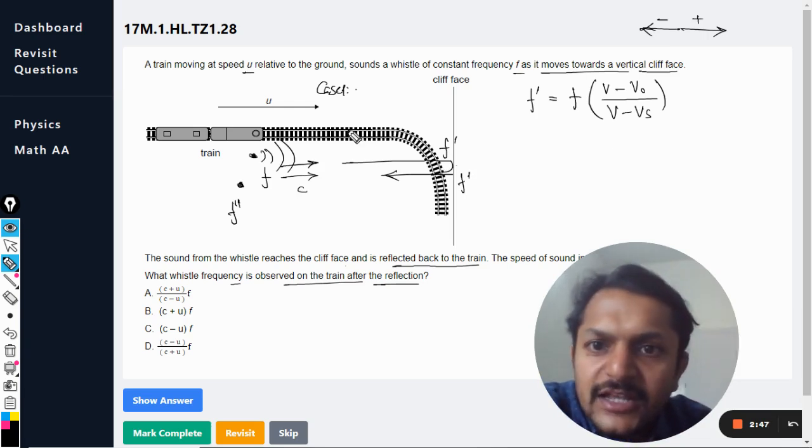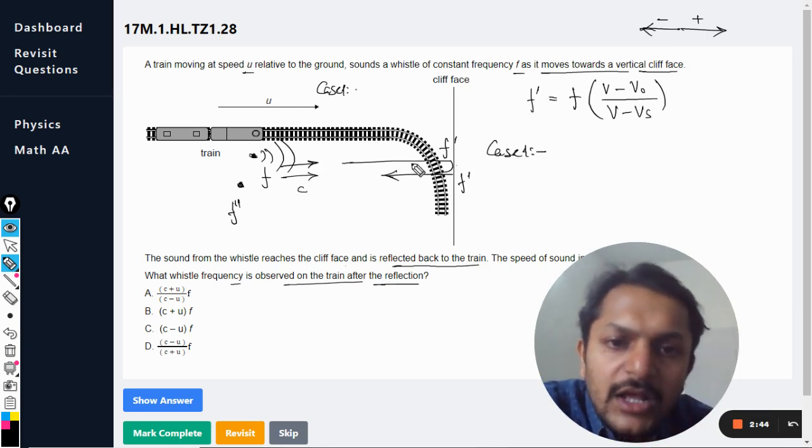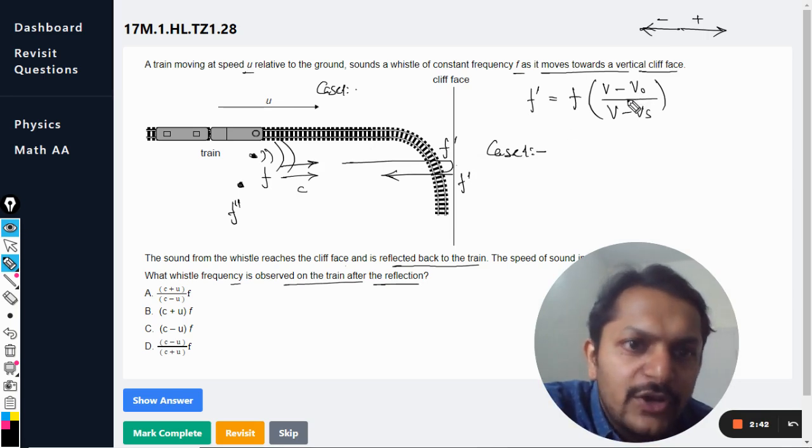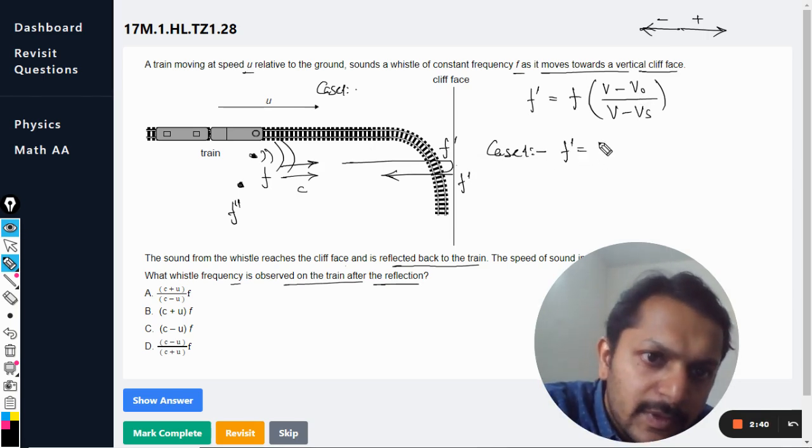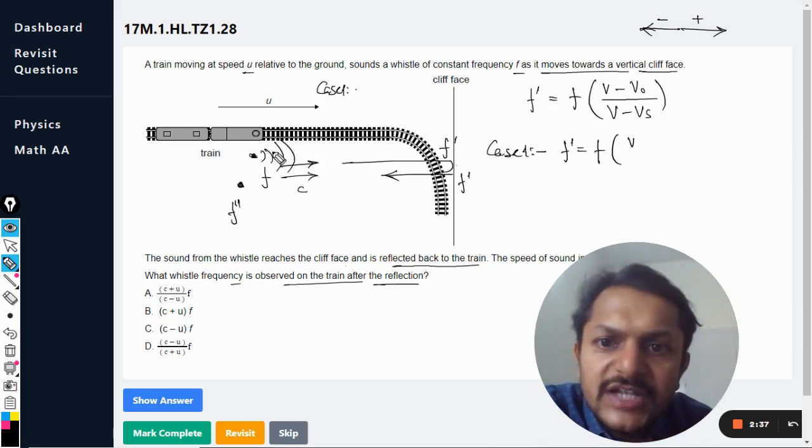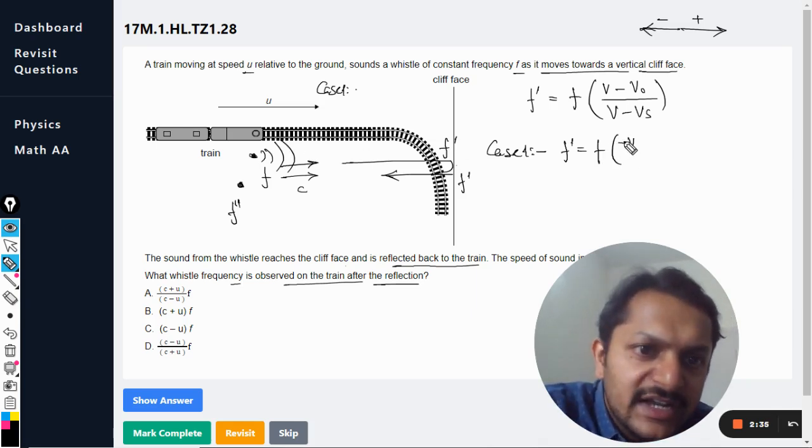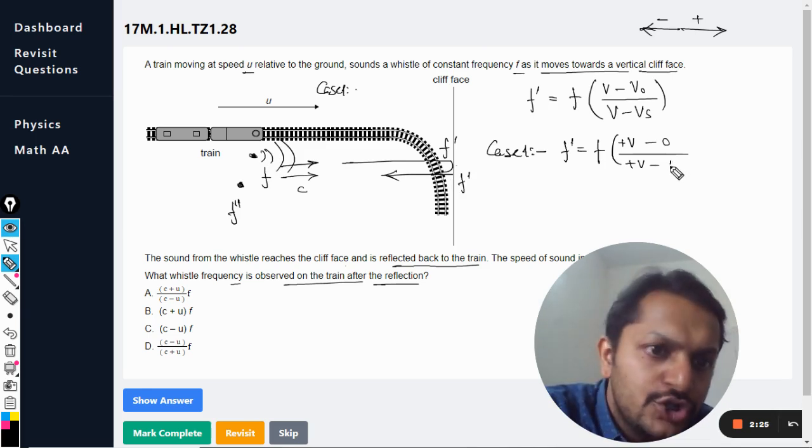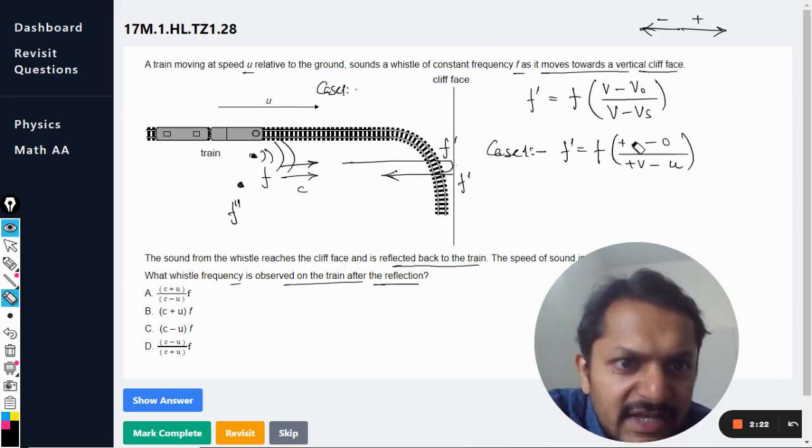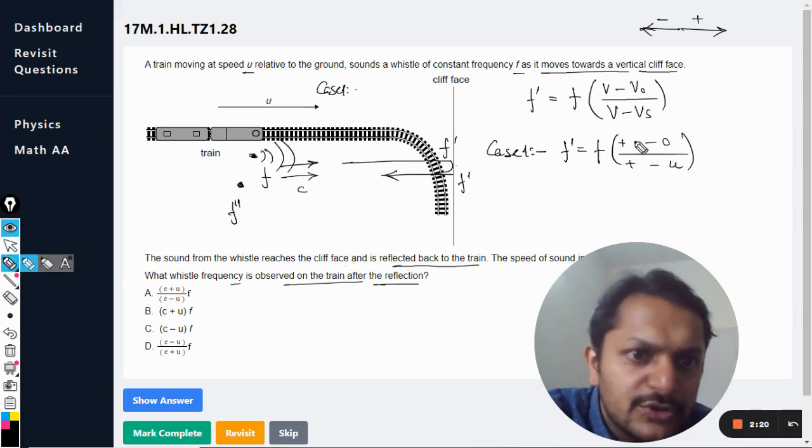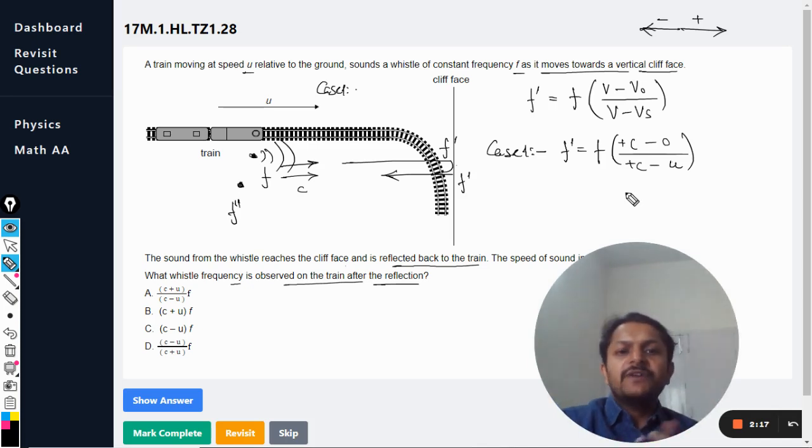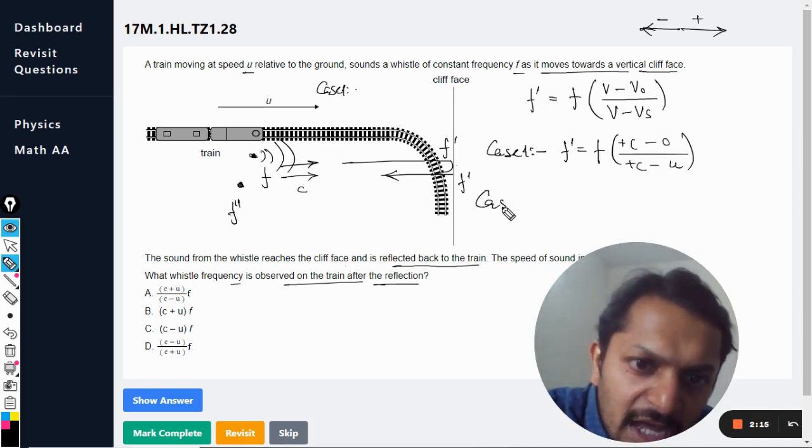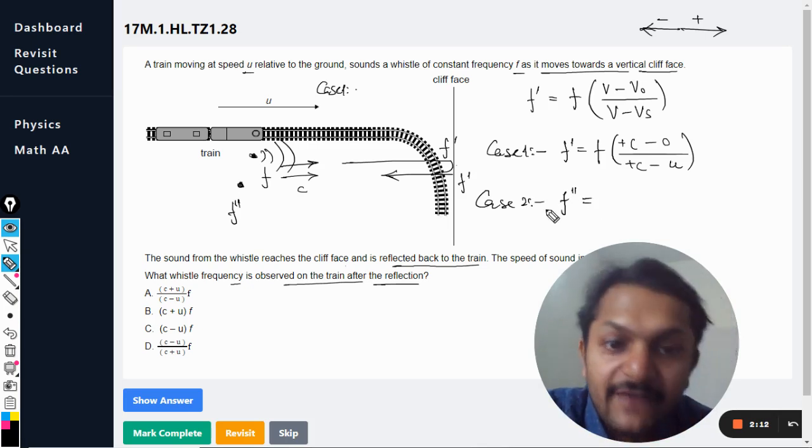In case number one, the observer is not moving, so v_o is zero. So f into v, the sound is moving towards right which is taken as positive, minus zero, divided by the sound is moving in positive direction and the source is also moving in the positive direction, which can be taken as u. This speed is given as c, so let me substitute c only to stay away from confusion.